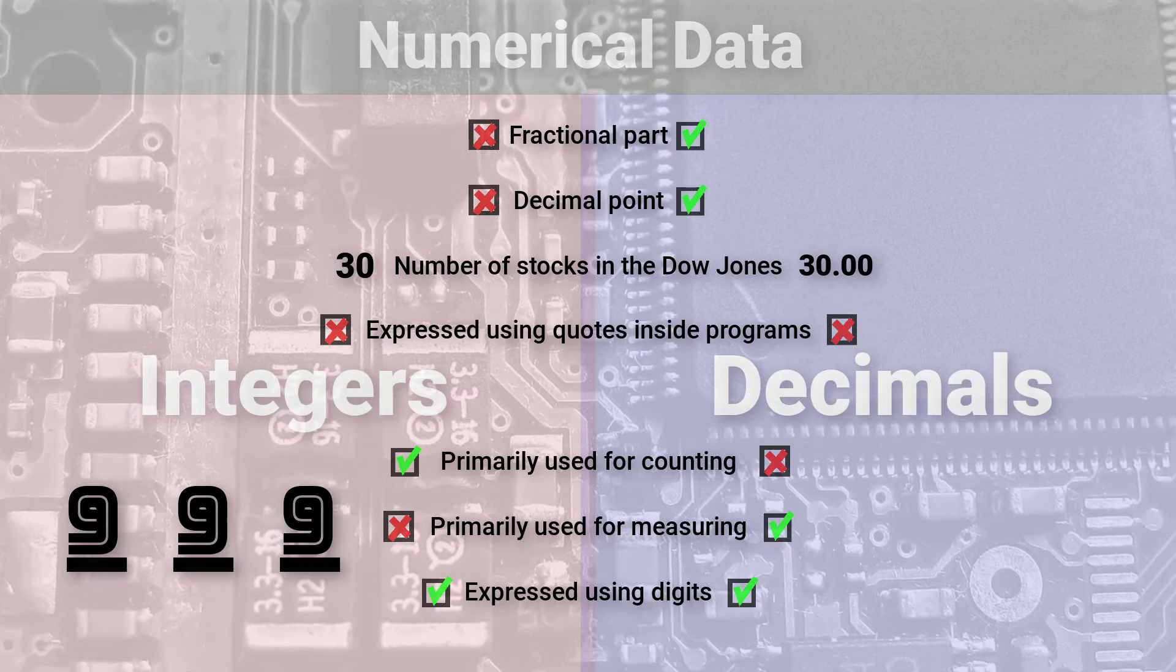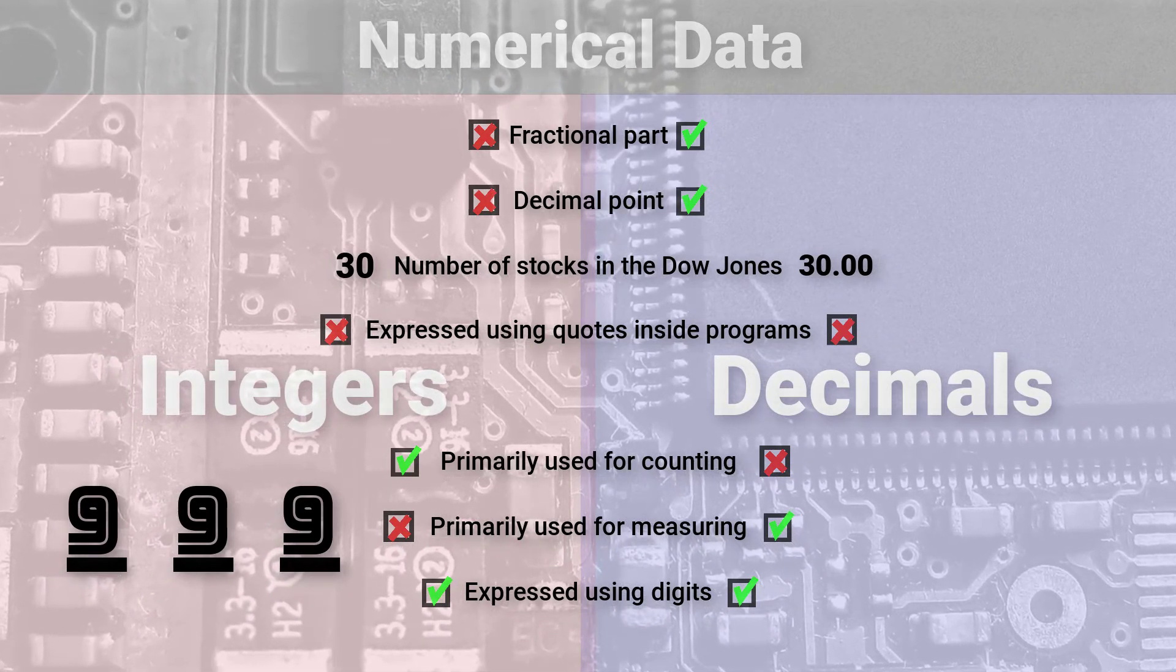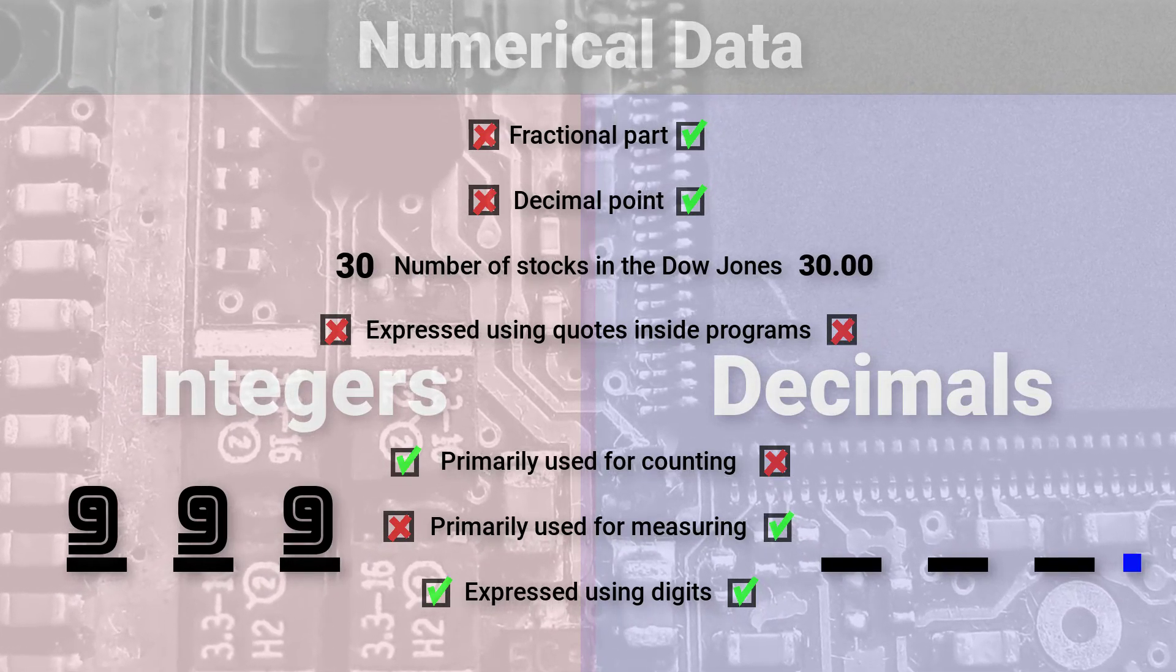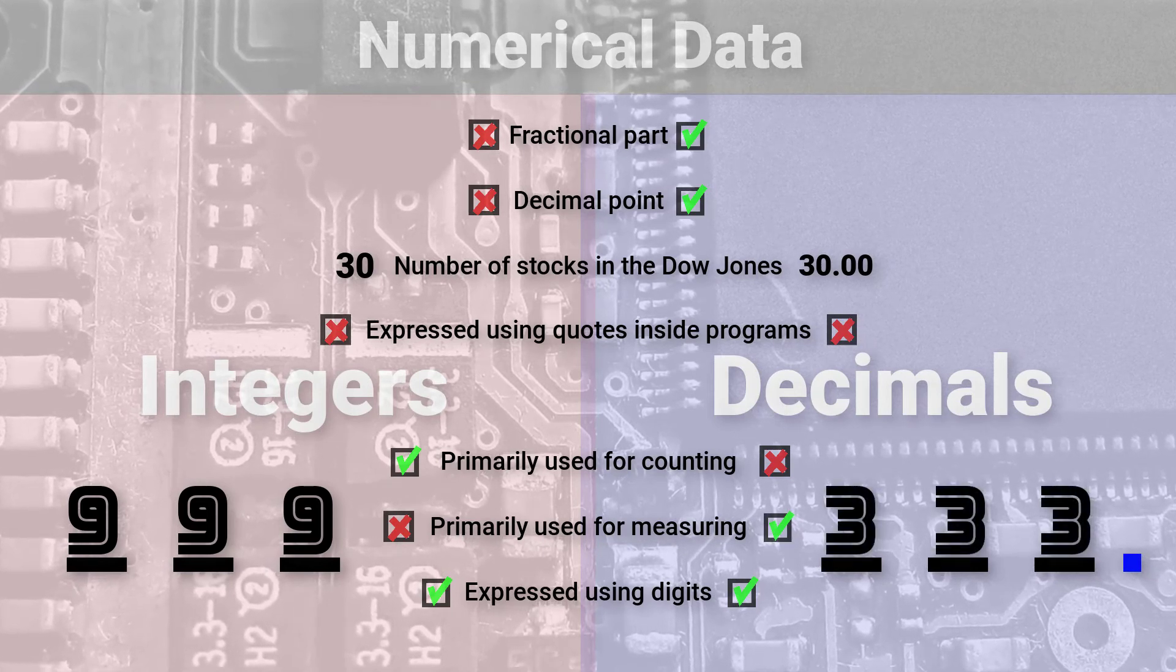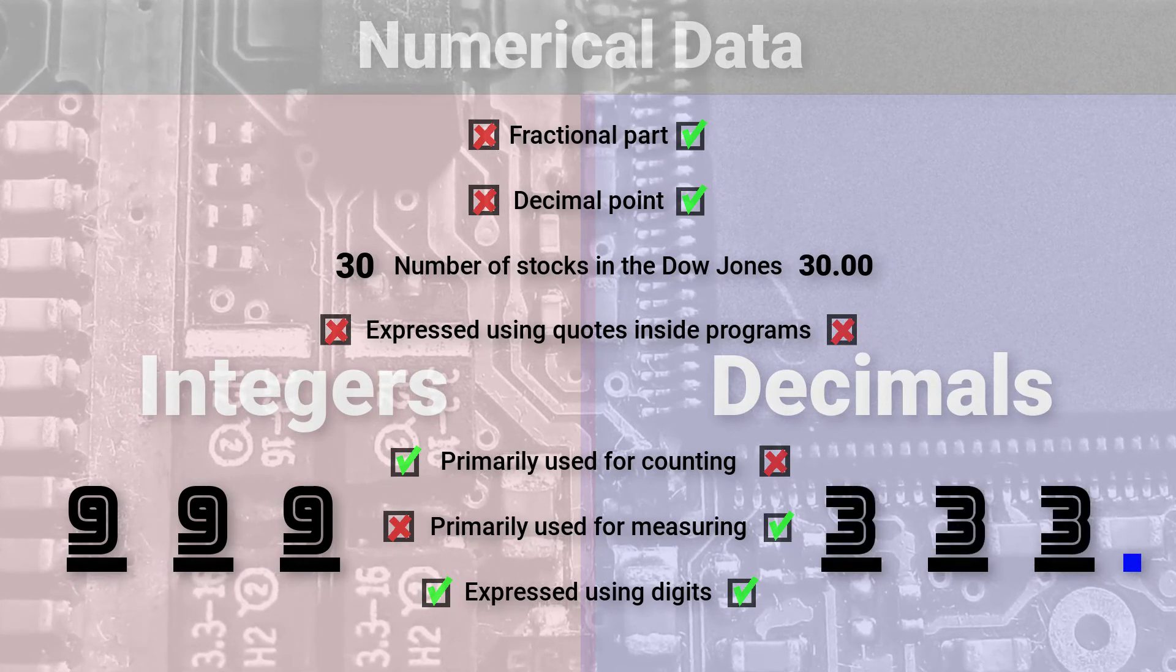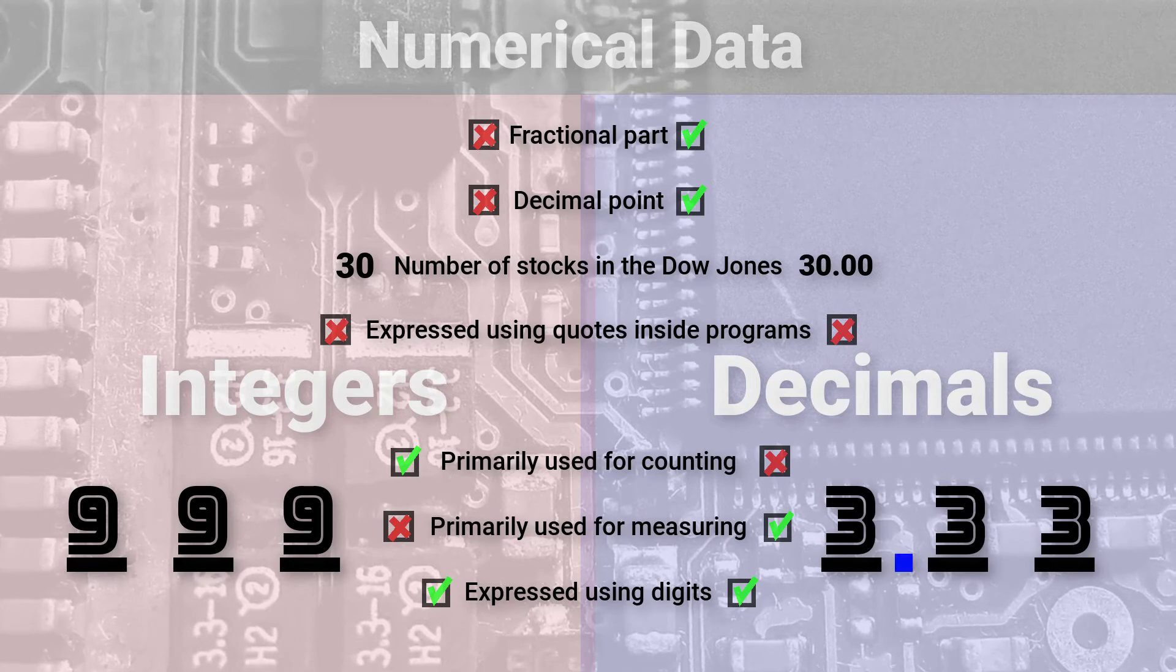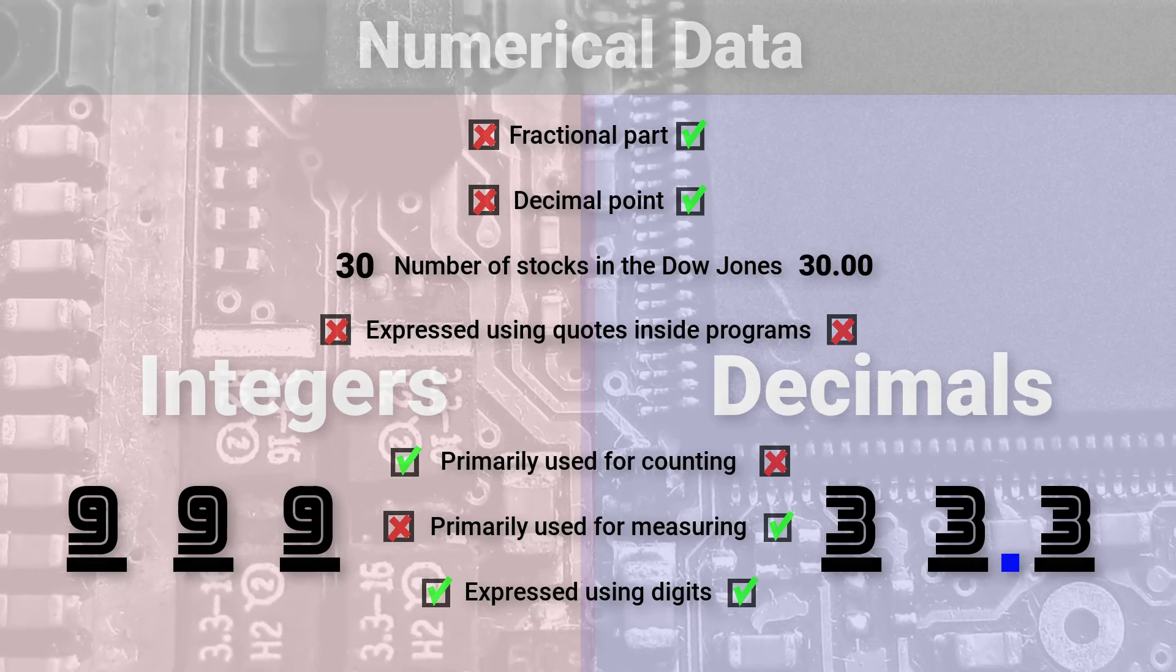Decimals, on the other hand, have a range constraint and a precision constraint. Suppose we have a total number of three digits to work with and a decimal point. The range and precision of numbers we can represent depends on where we place the decimal point. If we move the decimal point to the left, the range goes down, but the precision goes up. And if we move the decimal point to the right, the range goes up, but the precision goes down.